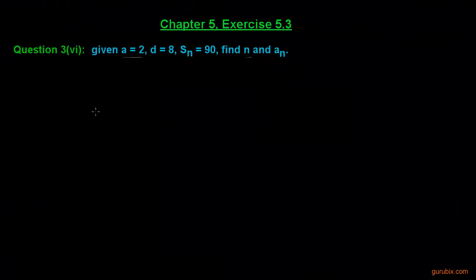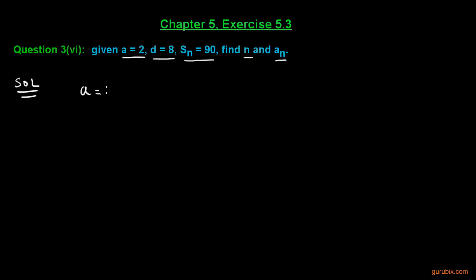This is the 6th part of question 3 of exercise 5.3 of chapter 5. In this question, we are given the first term a = 2, the common difference d = 8, and the sum of the first n terms equals 90. We have to find the value of n and the nth term.